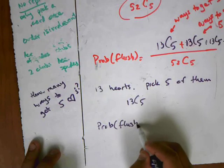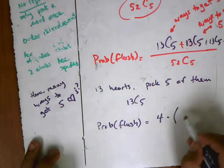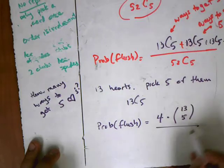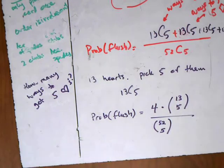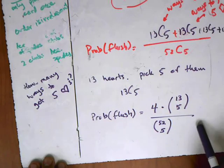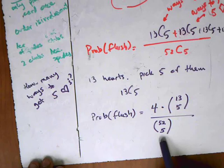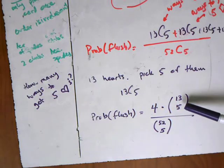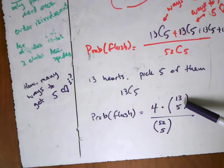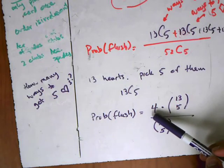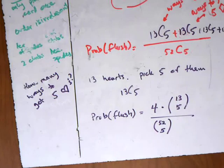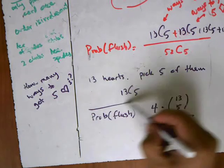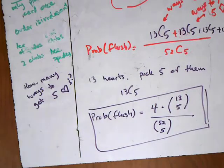Putting it all together, the probability of getting a flush is 4 × C(13,5) over C(52,5). The total number of poker hands is C(52,5), and the number of flush hands is 4 × C(13,5) — four suits, each with C(13,5) possible five-card combinations. That's our final answer for the flush.